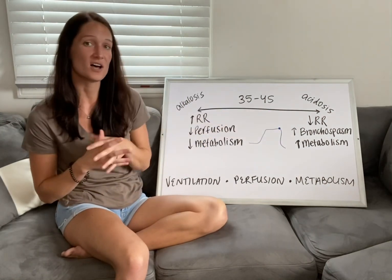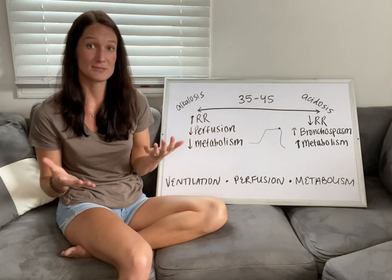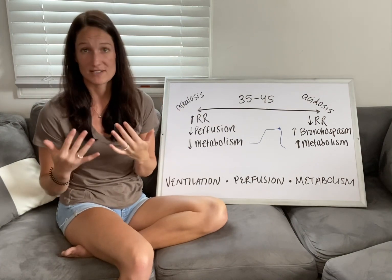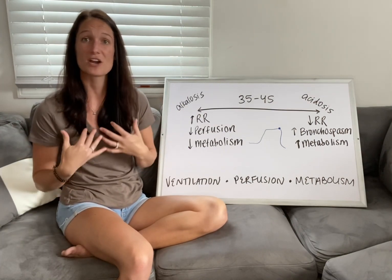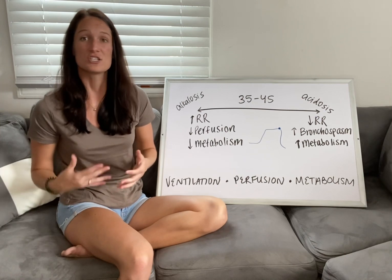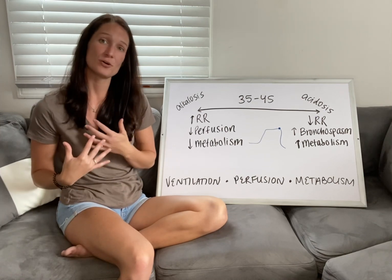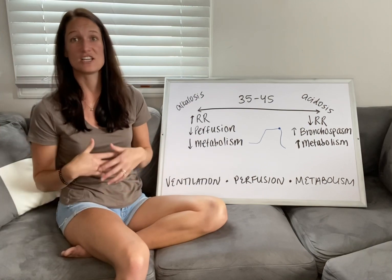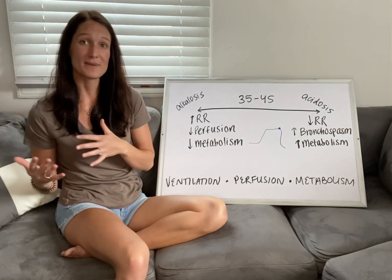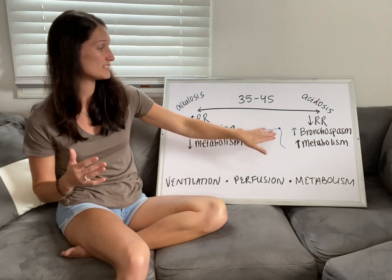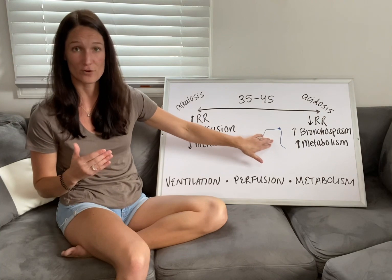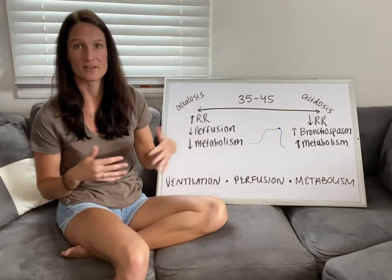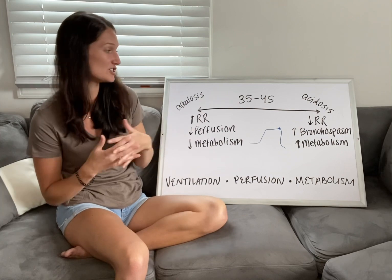Bronchospasm can also cause this. If you have a severe asthmatic and their bronchospasm is progressing, they're going to start trapping more and more air. While they can get a little air in, they're not able to get that air out, so CO2 builds up. In those patients you will see a shark fin-like waveform on your waveform capnography, which tells you they're having an exhalation issue.